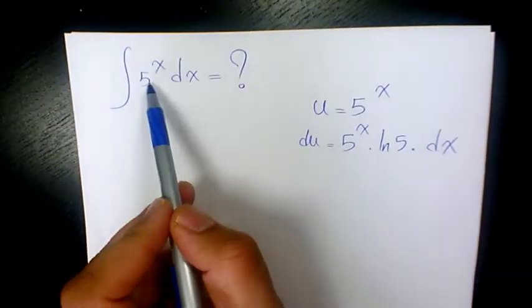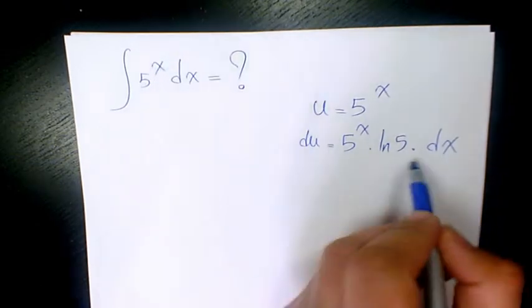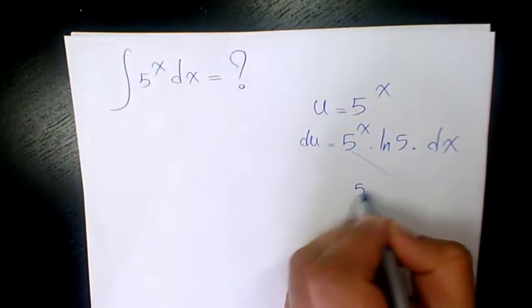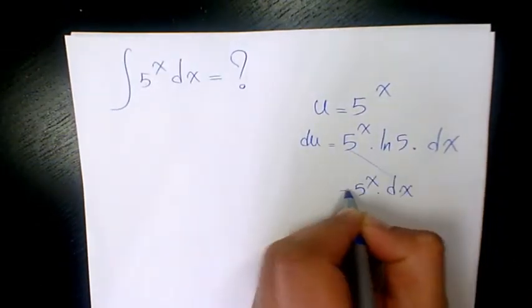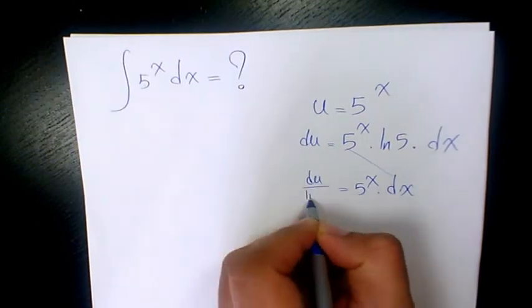And then, as you see here, we have 5 to the power of x dx. I keep this in here. So 5 to the power of x times dx will be equal to du over ln 5.